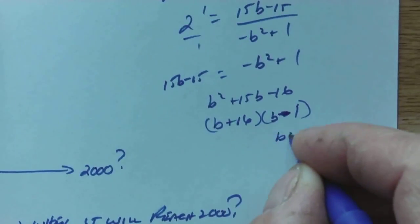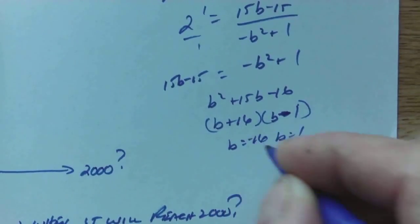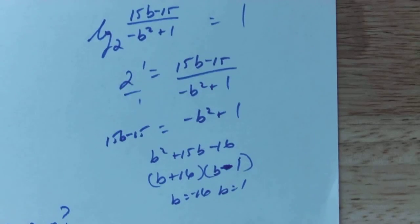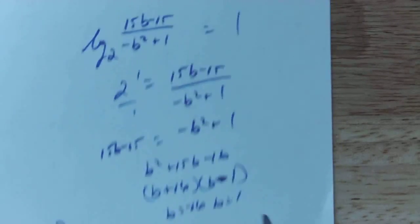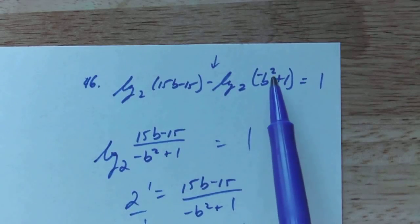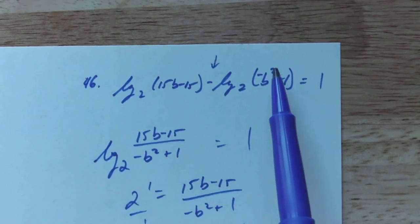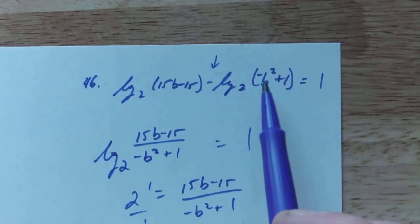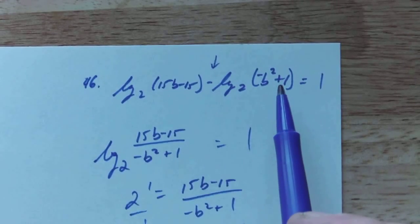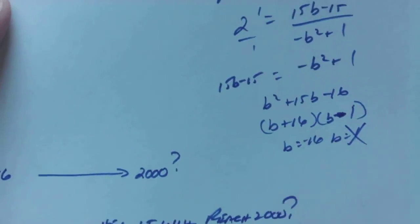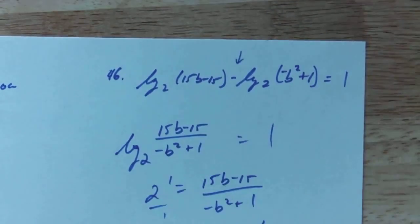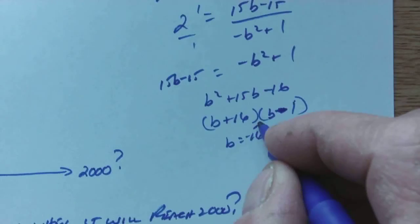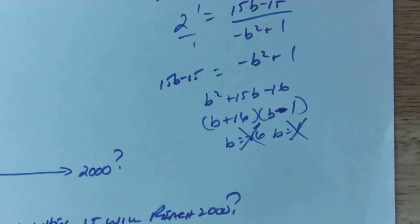b minus 1. So b equals 1 or b equals negative 16. Now remember, we've got to check for extraneous roots. Let's go way back to the beginning. If I check 1, I have negative 1 plus 1 gives me 0. It can't be 0. It's got to be positive. So 1 is bogus. So if I try negative 16, if I plug in negative 16 right here, you can see I'm going to get a negative. So that is bogus. That equation has no solution.